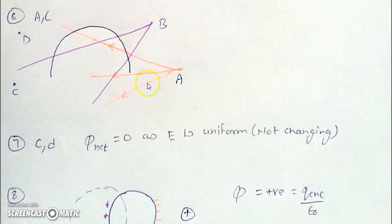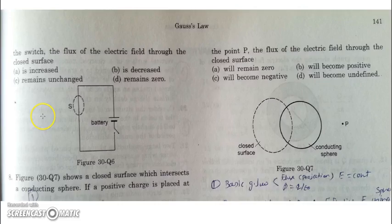So if we place the charges at B and D, the net flux will change. But if we place the charges at A and C, the net flux will remain unchanged. In the next question it is specified that when the switch is closed...